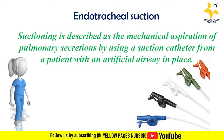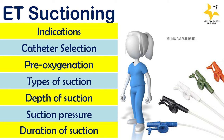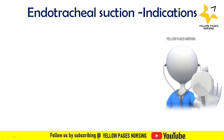We will be discussing certain facts about endotracheal suctioning under the following headings: indications, catheter selection, pre-oxygenation, types of suction, depth of suction, suction pressure, and duration of suction. These are really going to be useful for nurses while performing endotracheal suctioning.